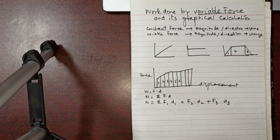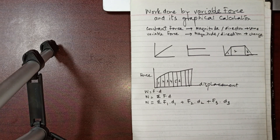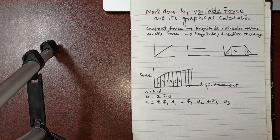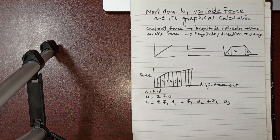The area under the force-displacement curve gives us the work done by a variable force. In the next video we will cover kinetic energy, potential energy, derivations, and work done against the gravitational field. Till then, Allah Hafiz. If you have any queries, ask in the comments — you're always welcome.